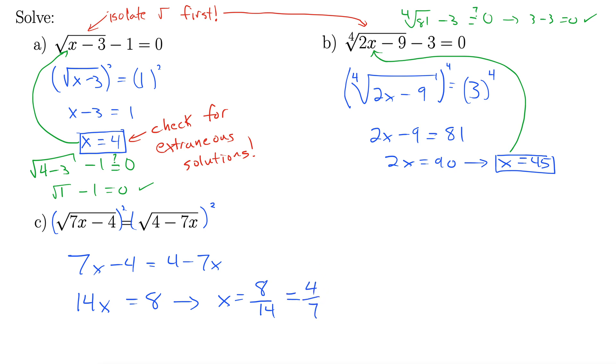Does it check out? Let's see. Remember to plug into the original. Alright, so we're going to plug in up here. So we're looking at square root of 7 times 4 sevenths minus 4. Does that equal the square root of 4 minus 7 times 4 sevenths?